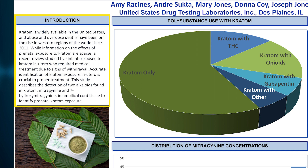This assay detects mitragynine and 7-hydroxymitragynine, which are two of the psychoactive alkaloids found in the kratom plant. At the time that we were pioneering this prenatal kratom detection, these were the only two analytes of interest in the field. Since then, there have been other alkaloids that have become of interest, but it appears from the current data that mitragynine has always been present, even when these other alkaloids are detected. And most often, mitragynine has the highest concentration of all the alkaloids detected for each specimen.